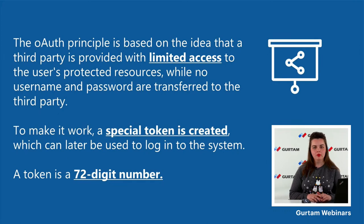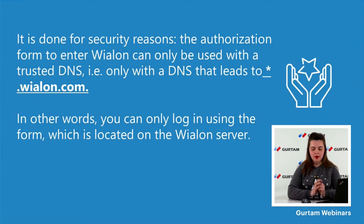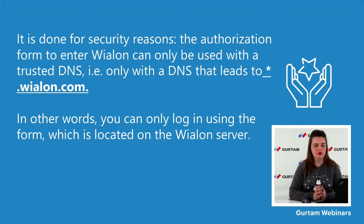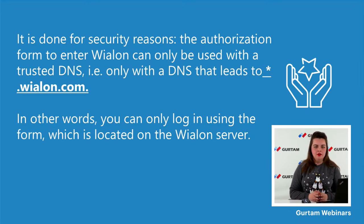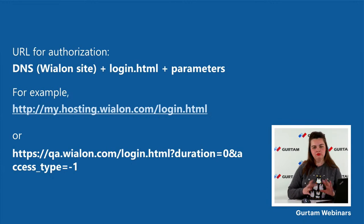This is all for security reasons. The authorization form to enter Vialon can only be used with a trusted DNS. A trusted DNS means a DNS which leads to wialon.com. Most of you should have a personal DNS for Vialon. To work with it, you need to set up CNAME records directed to hosting.wialon.com or hosting.wialon.us. It is not possible to use some other authorization form — only our authorization form.